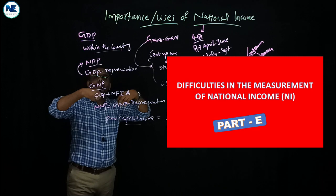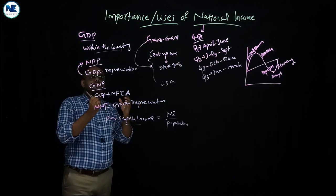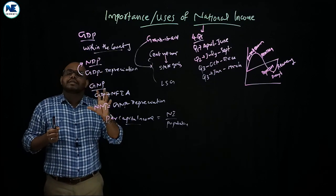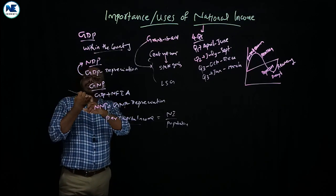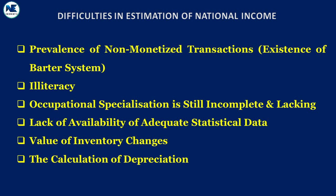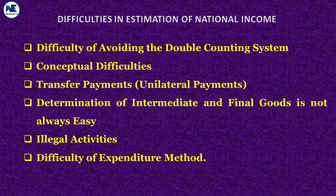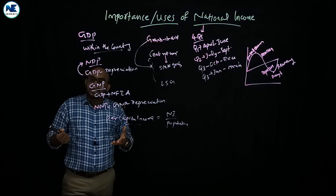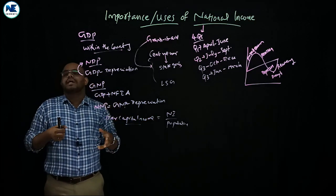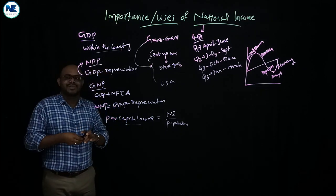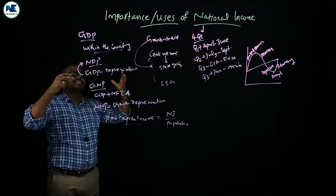The major problems or difficulties in the measurement of national income include: the problem of double counting or multiple counting, conceptual issues, the problem of illegal activities, inclusion or exclusion of housewife income, measurement of depreciation, and transfer payments. There are around 10 to 15 points covering these issues, which will be discussed as the next topic.